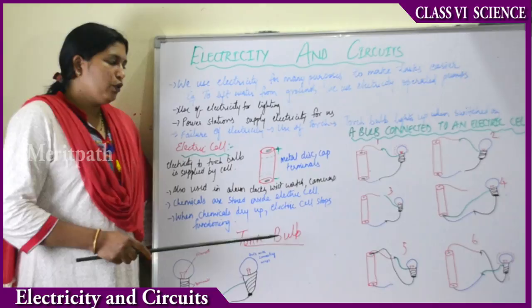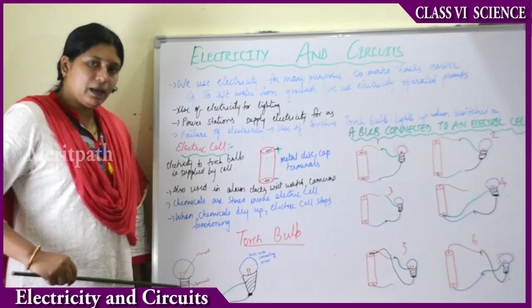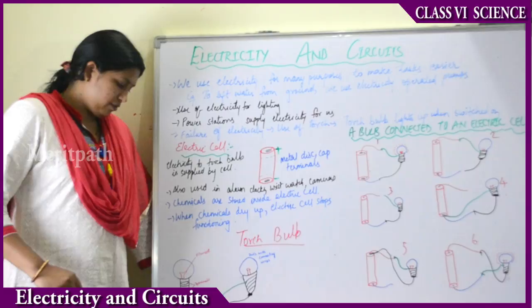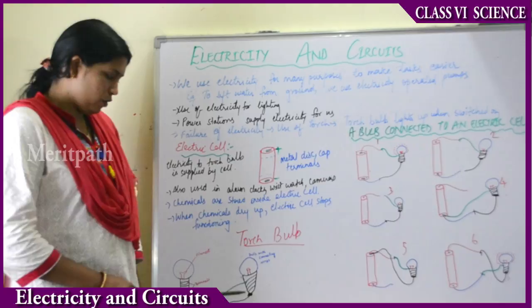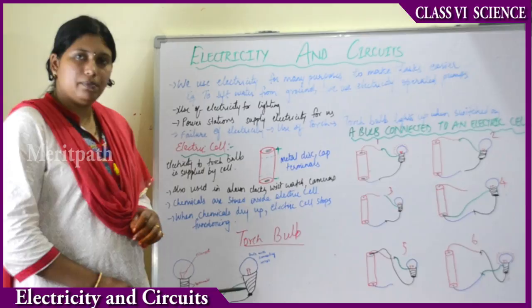Moving on to the torch bulb — with the help of the electric cell, electricity is supplied to the bulb. A bulb has a filament, which is a small thin wire structure inside. The bulb also has a metal base with two terminals and an outer glass covering. Two pieces of filament wire are joined to the two terminals.